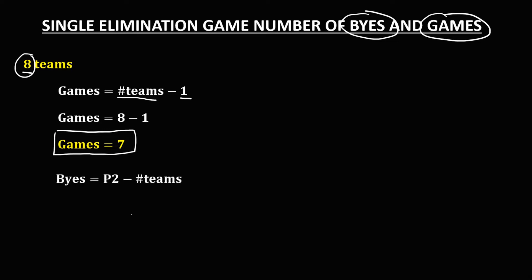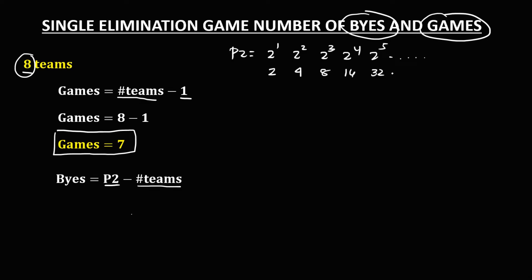For the number of byes, that's the power of 2 minus the number of teams. The powers of 2 are: 2 to the power of 1 = 2, 2² = 4, 2³ = 8, 2⁴ = 16, 2⁵ = 32, and so on. Take note that this power of 2 must be greater than or equal to the number of teams.